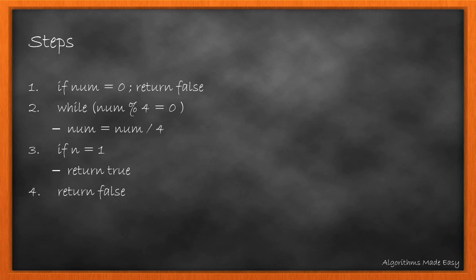Here is the algorithm of what we discussed. If number is 0, we return false. Else, we loop while number mod 4 is 0 and reduce the number to number divided by 4. At the end, if the number left is 1, we return true. Else, we return false.